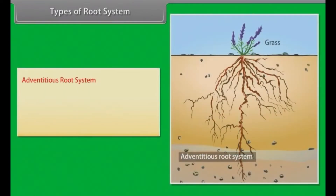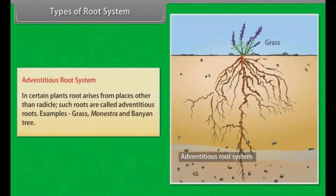Adventitious root system: In certain plants, roots arise from places other than the radicle. Such roots are called adventitious roots. Examples: grass, Monstera, and banyan tree.